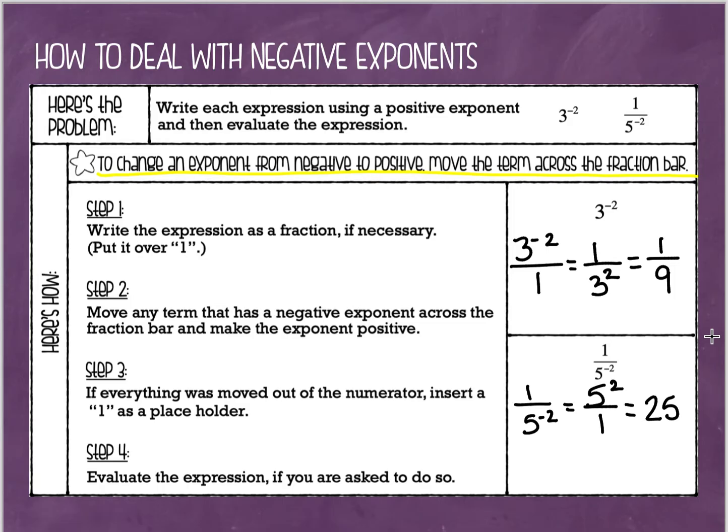So just remember: when you have a negative exponent, you don't want your exponent to be negative — you want him to be positive. So just move him. Once he moves somewhere else, it turns him into a positive.